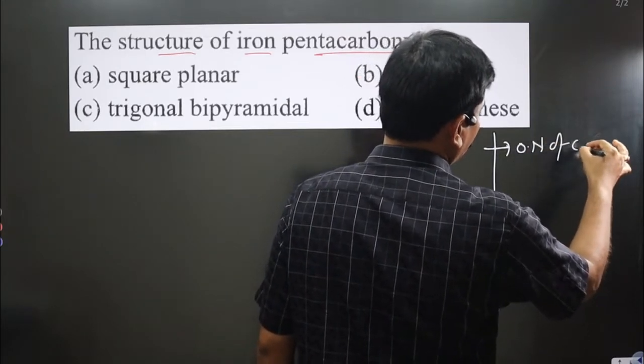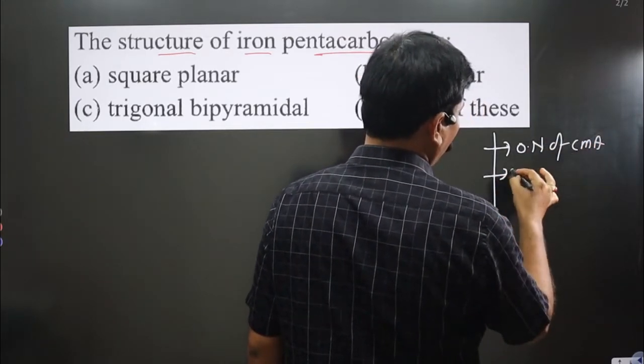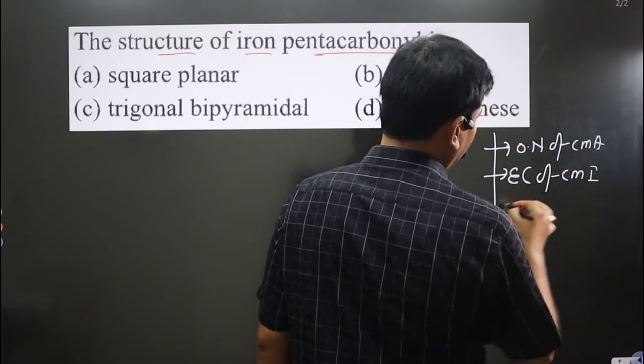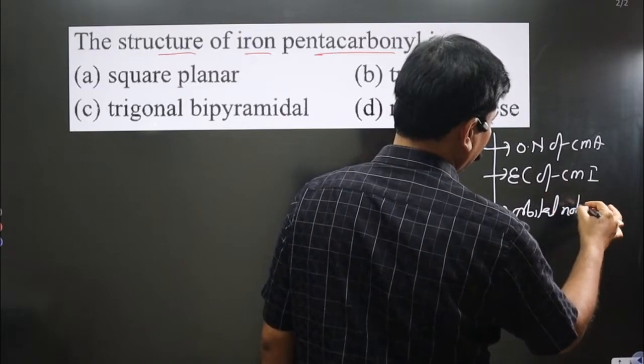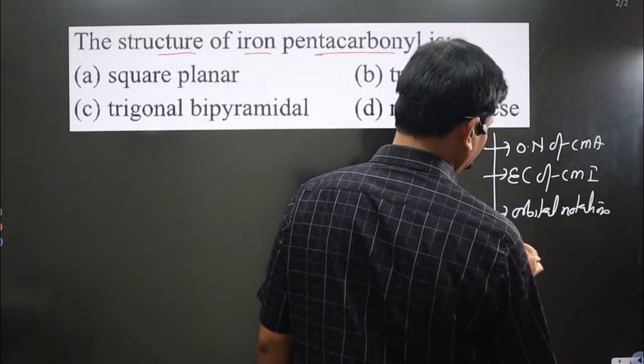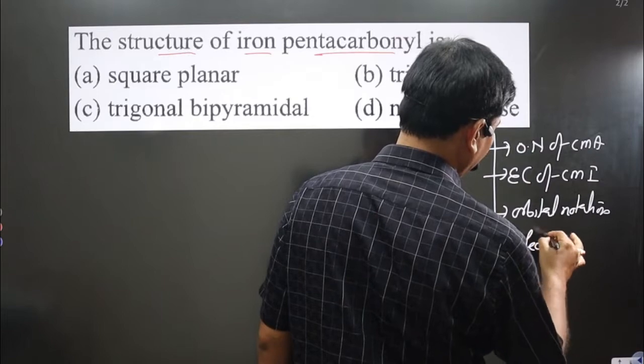First step is writing the oxidation number of the central metal atom. Next, we have the electronic configuration of the central metal ion. Then the next step is orbital notation, and then we consider the effect of ligand.